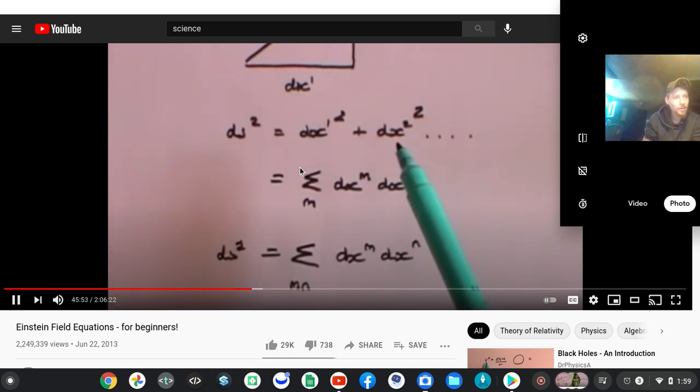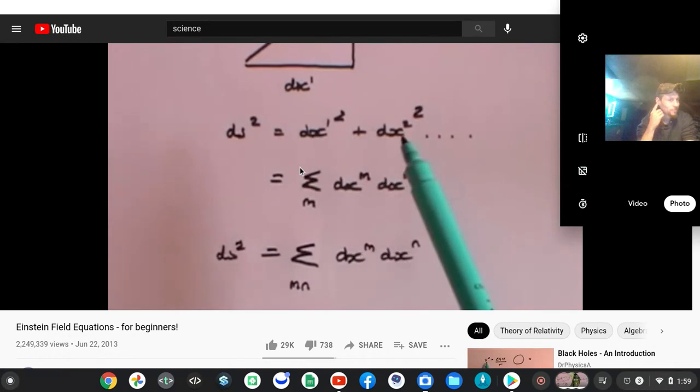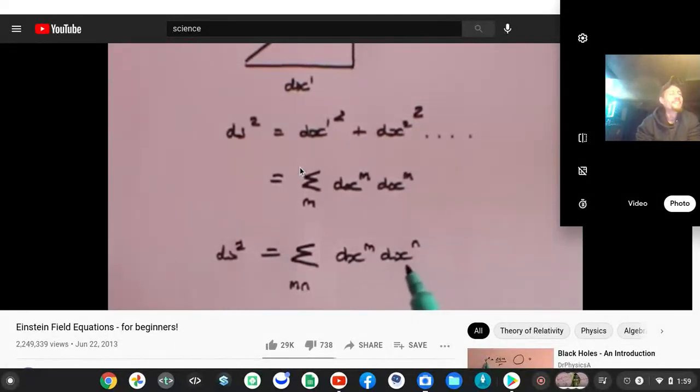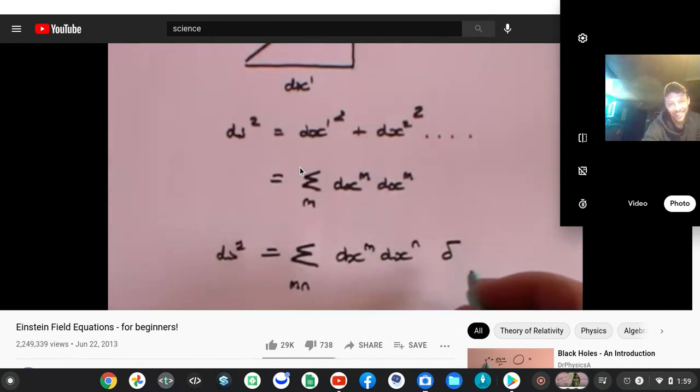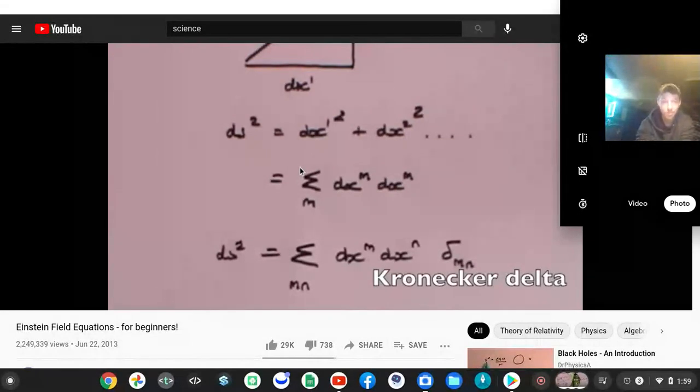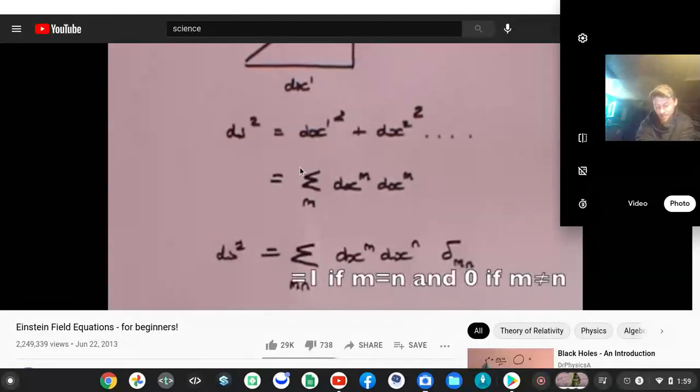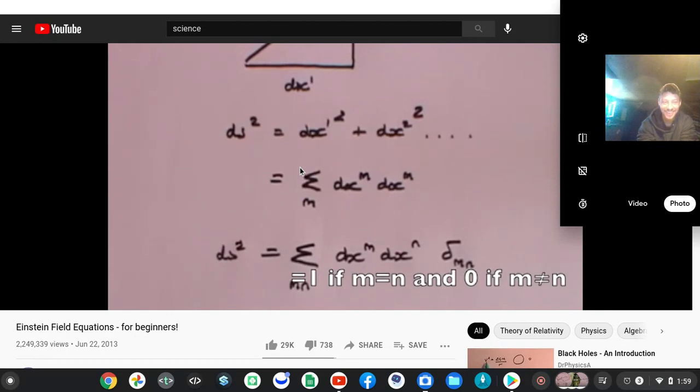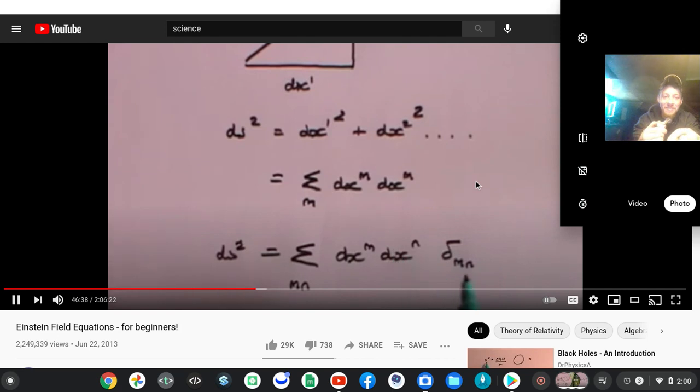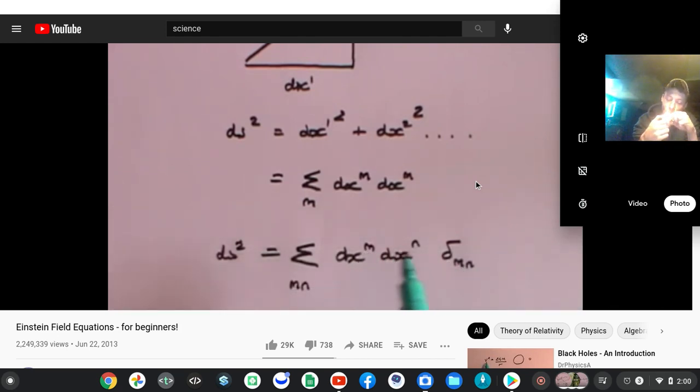You will say that cannot be right because there is no combination of dx1 dx2 in Pythagoras, there is only dx1 squared and dx2 squared. If you do this you're going to get a dx1 dx2 term and we don't need it. Perfectly true. So we add a further term which is called delta mn, the Kronecker delta. It has the value of 1 if m equals n and the value of 0 if m does not equal n.